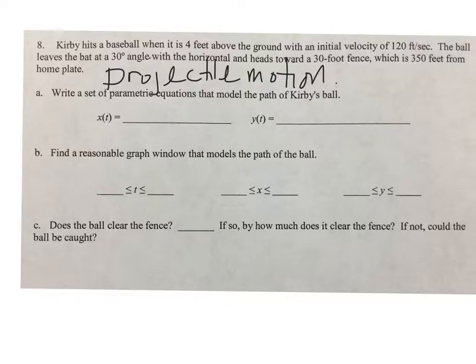We're going to use two formulas for projectile motion. The first is x equals the initial velocity times the cosine of the angle times t.